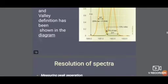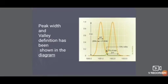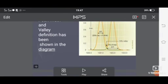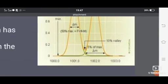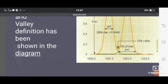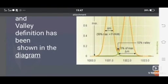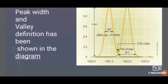You can see in the spectra that these are two overlapping peaks, with a small gap between them — this is the valley. Here it is labeled as the 10% valley.